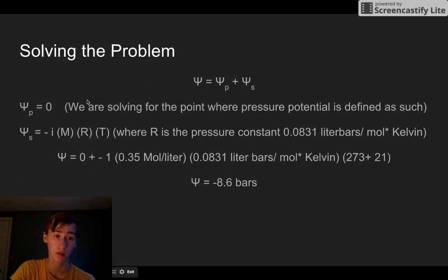Here we solved the problem. We've decided we're going to use the point where this is zero. It's just a matter of plugging these in. It's going to be zero plus negative 1 times 0.35 mols per liter times this constant. The units are designed to cancel out. That should be 273 plus 21, which is 294 Kelvin. You crank that in your calculator. It asks you to round to one decimal place. So negative 8.6 bars is the water potential.